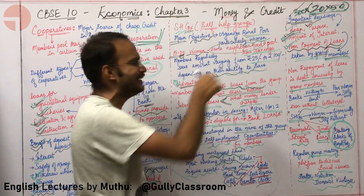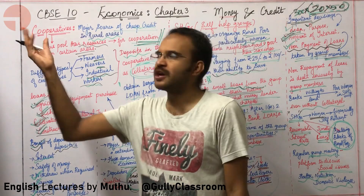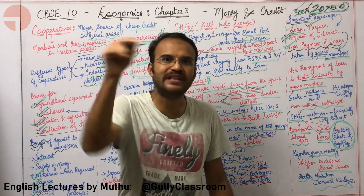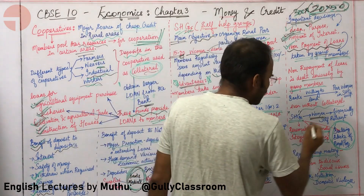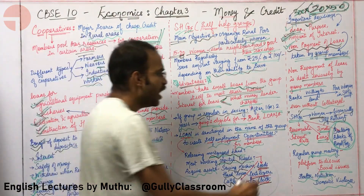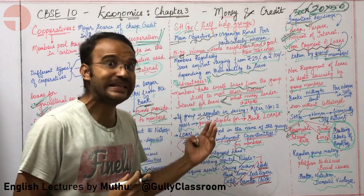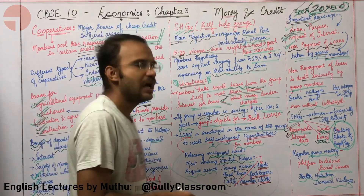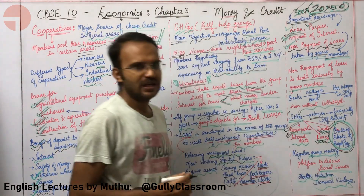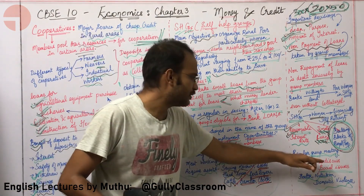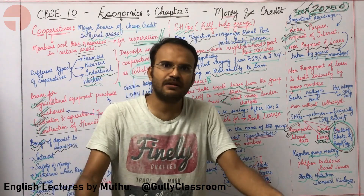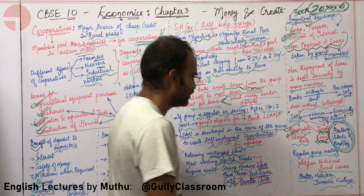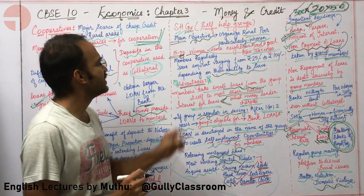Self-help groups have made women in India financially independent. They do not need to depend on a moneylender in emergencies — they can approach their own SHG. Loans have a reasonable interest rate and are timely, making SHGs the building blocks of the rural poor. Group members also conduct regular meetings that become a platform for discussing social issues like children's health, nutrition, education, and domestic violence.